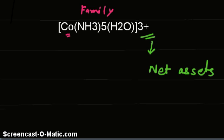So +3 means the whole family has plus 3 dollars. If the charge is negative on some complex ion, then minus 3 would be the loan or debt on that family.